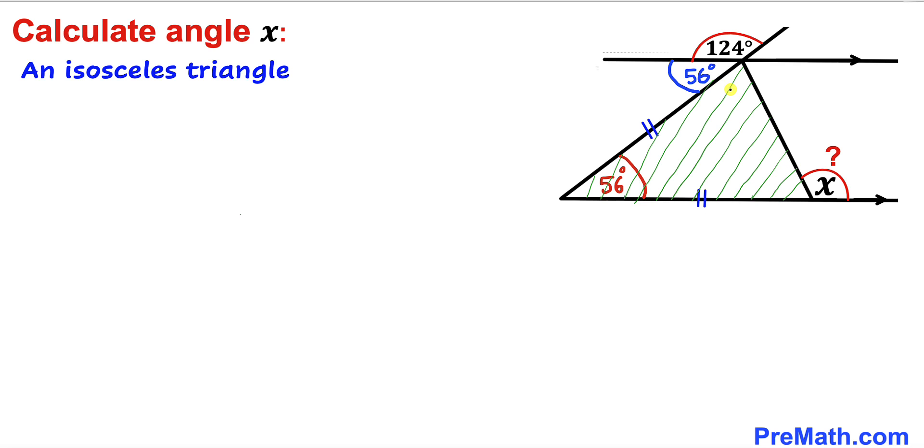Therefore, these angles have to be 62 degrees each. This is 62 degrees and this one is 62 degrees as well. We can see the sum of these three angles is indeed equal to 180 degrees.